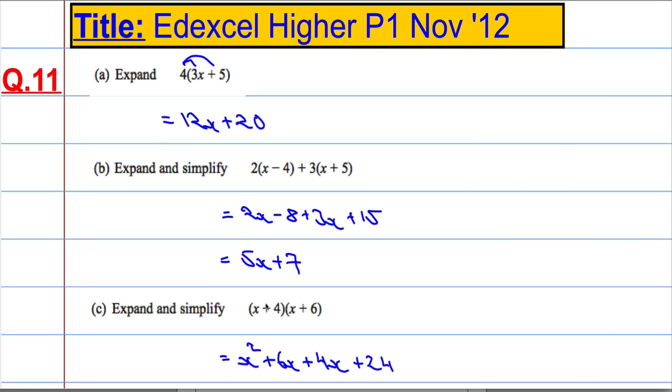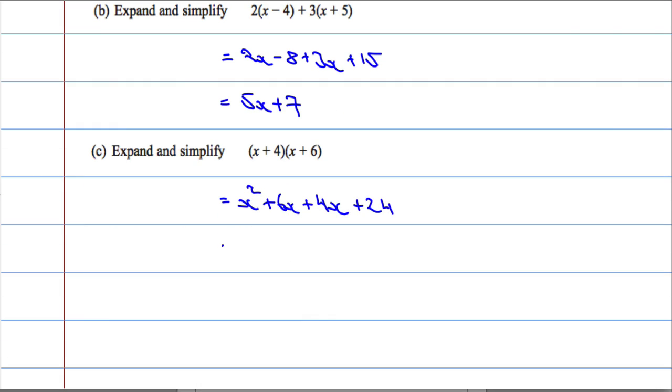Very nice that they didn't give us any negative signs in there. Anyway, tidying up, collecting like terms. x squared, 6x and 4x is 10x, and then we have the 24.